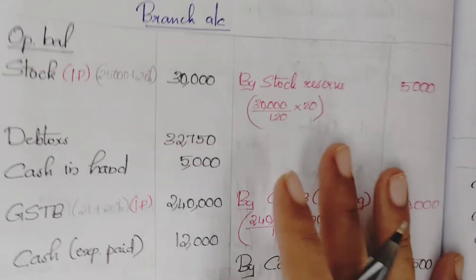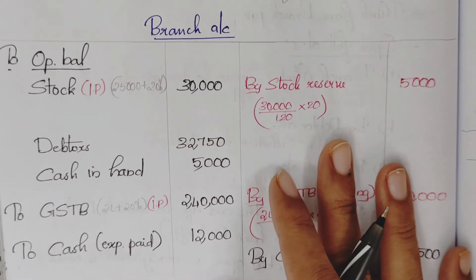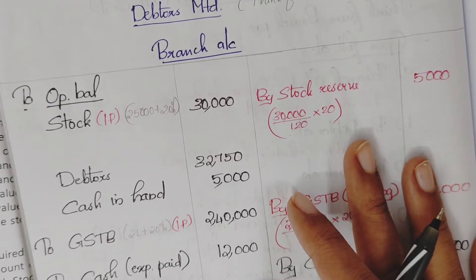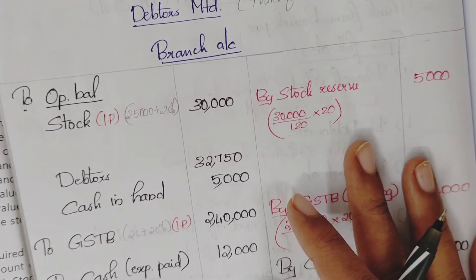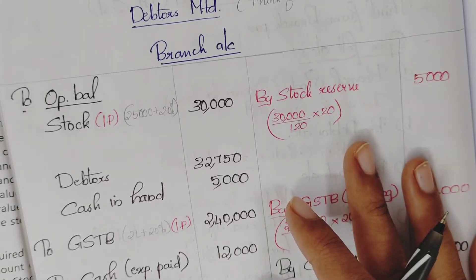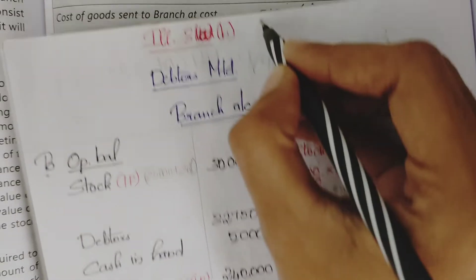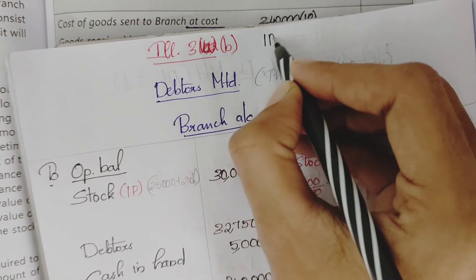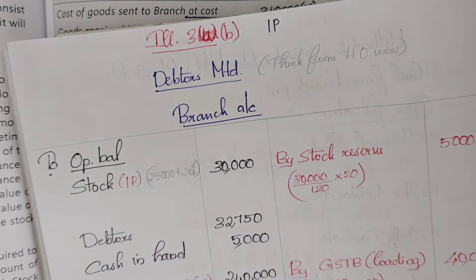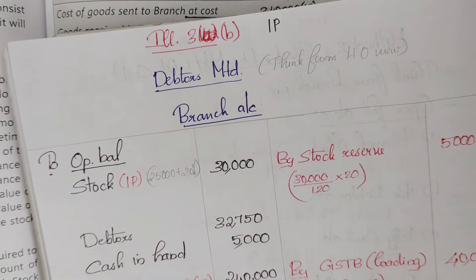First, the debtors account is prepared. The third question is different from the first question. In the first question, goods are recorded at cost at head office in the branch. In the third question, goods are recorded at invoice price at head office in the branch. The profit element — 20% — needs to be cancelled.